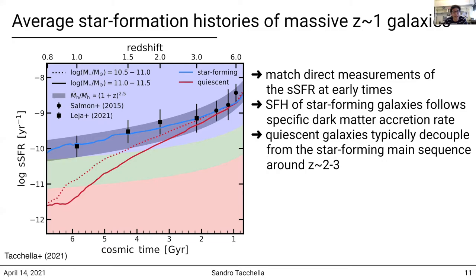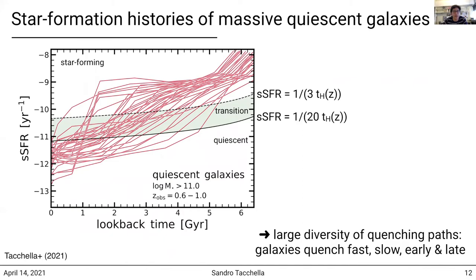The star formation history of star-forming galaxies follows the specific accretion rate of the dark matter halos. Now we don't just want to stack the data — we actually have information for each individual galaxy. I show you here the star formation histories for the quiescent galaxies. You can see that the specific star formation rates at early times are all very high, so basically all quiescent galaxies at the epoch of observation were star-forming at earlier times. They have been transitioning over a wide range of different timescales — some galaxies transition quite quickly, while others are transitioning very slowly. Furthermore, the galaxies transition over a wide range of epochs: some quench very early on, while others quench quite late. This diversity is the key message of this presentation.